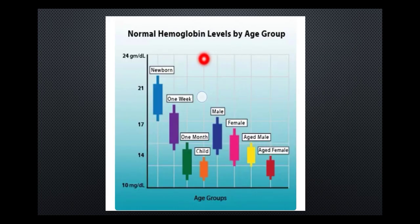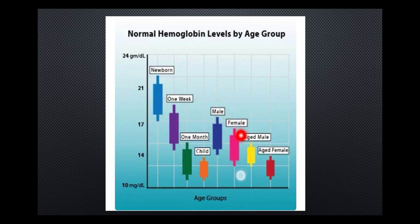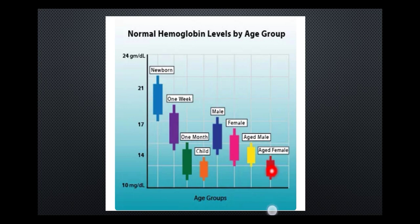Looking at hemoglobin levels by age: in newborns it is quite high at about 24 grams per deciliter. A week later it dips to about 19, and by about a month it is around 15. In children it is about 14. In adult males it is about 15 to 17 grams per deciliter, whereas in females the maximum is about 16 grams per deciliter. As one ages, levels reduce — down to about 14 in males and 10 in females.